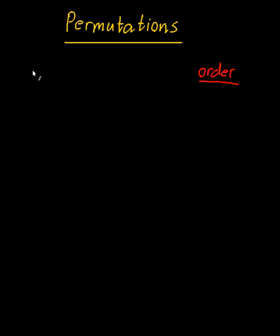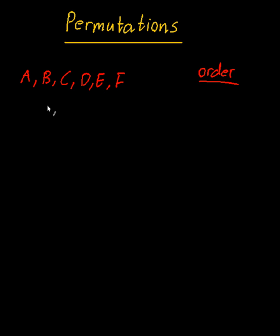Suppose I have the letters A to F: A, B, C, D, E, F. The first question — the most basic question — is how many ways can I arrange these six letters? And the answer is six factorial.